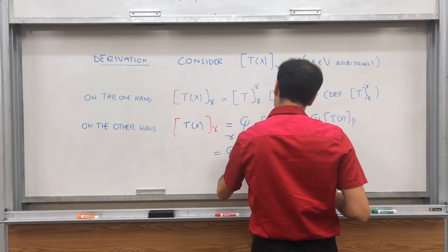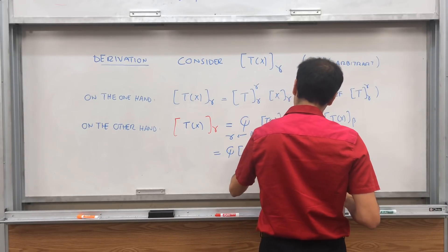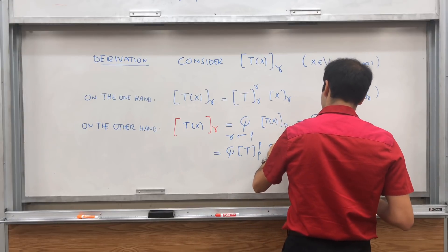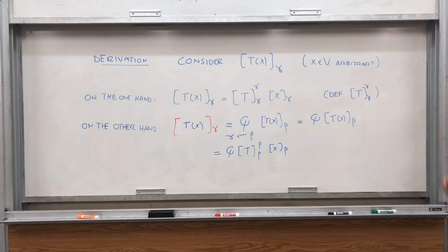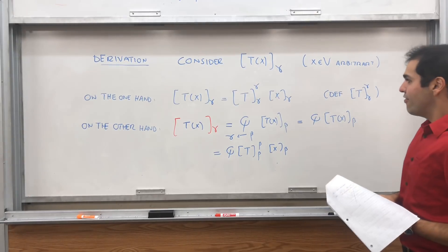This is Q times the old matrix of T times X beta. So Q, T beta beta, and then X beta. That's just the definition of the old matrix of T.